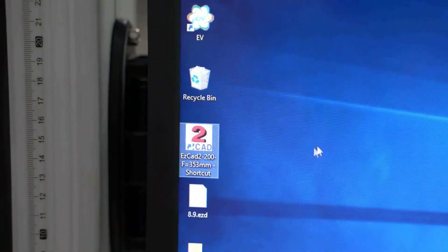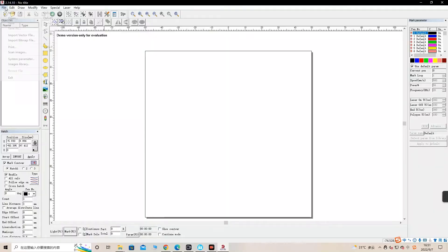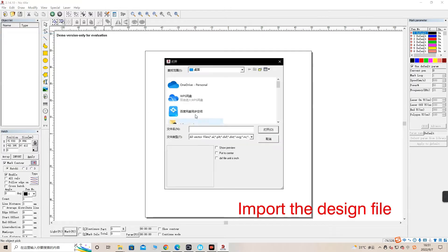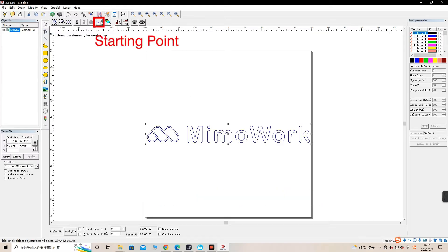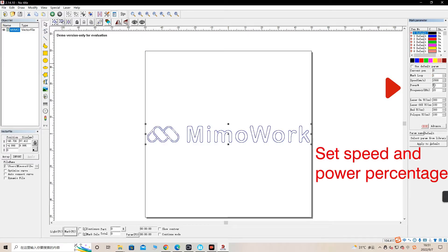Now let's click the marking software EasyCat on the computer and import the design file. Today we will use our company logo to demonstrate. First, click the starting point button to center the whole design, and we can set the recommended marking speed and power percentage on the right side of the bar menu.